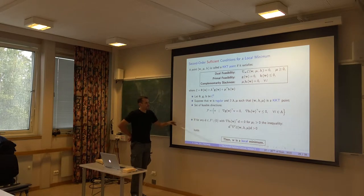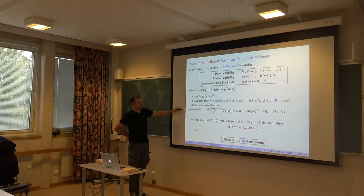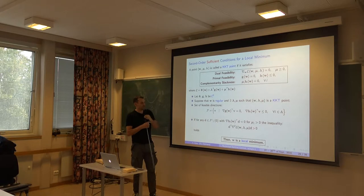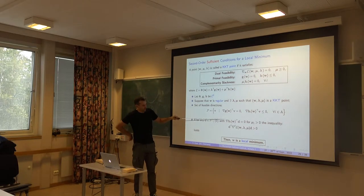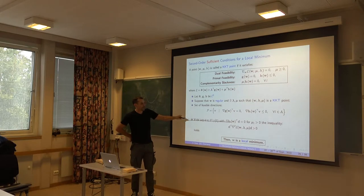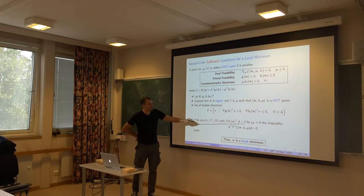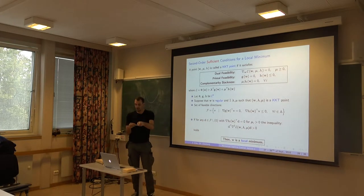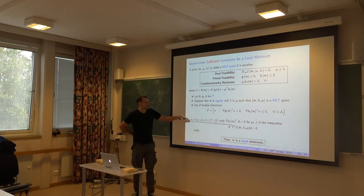If you have constraints, you have this set F defined by the Jacobians, and you have to work in that set F with your directions D. So the Hessian does not need to be positive definite in every direction, but only in specific ones defined by F. Also, it's not only that D must be in F — on any constraint that is strictly active, meaning the multiplier is positive and not zero, the D's you select must be in the null space of those constraints.